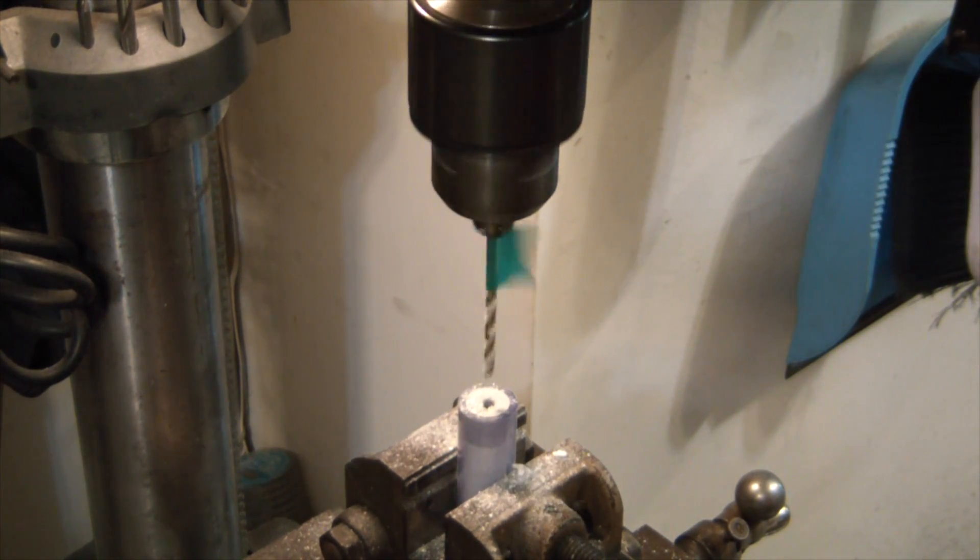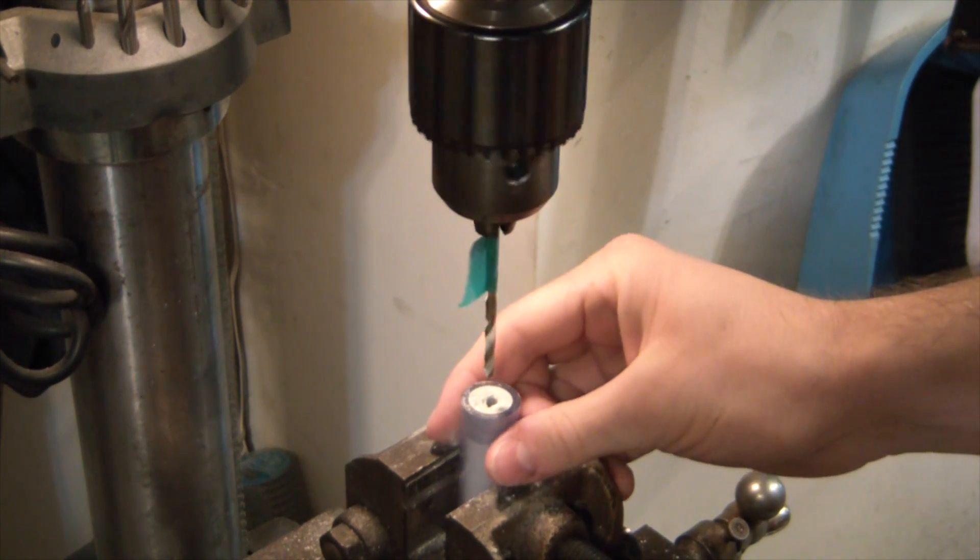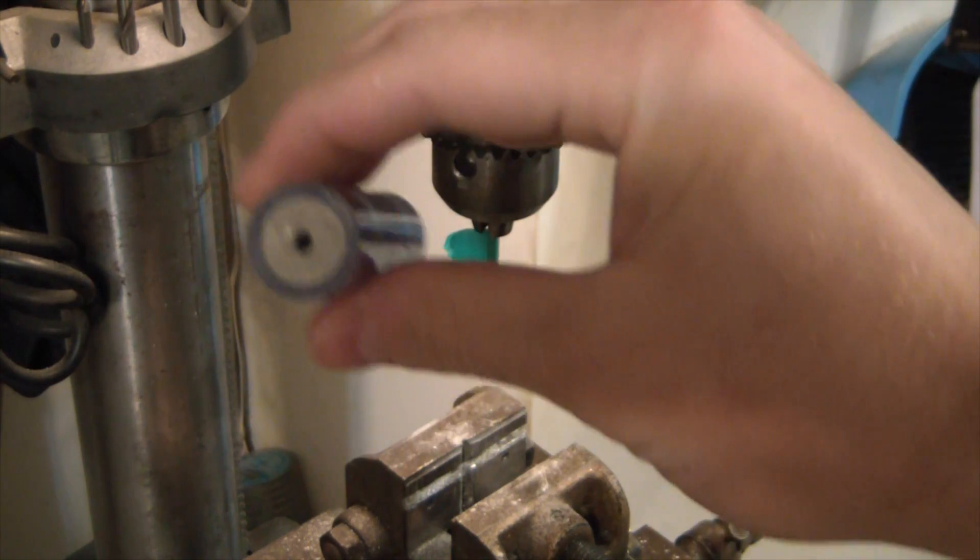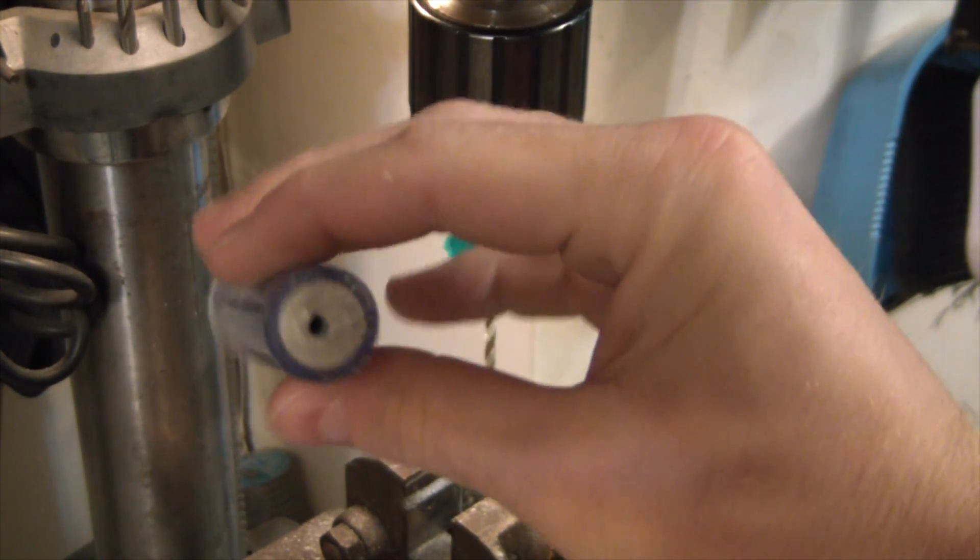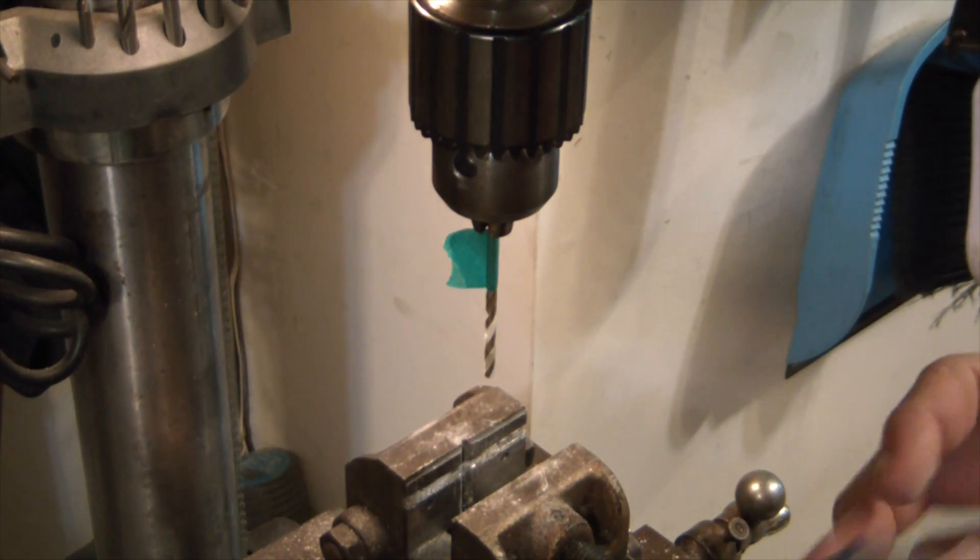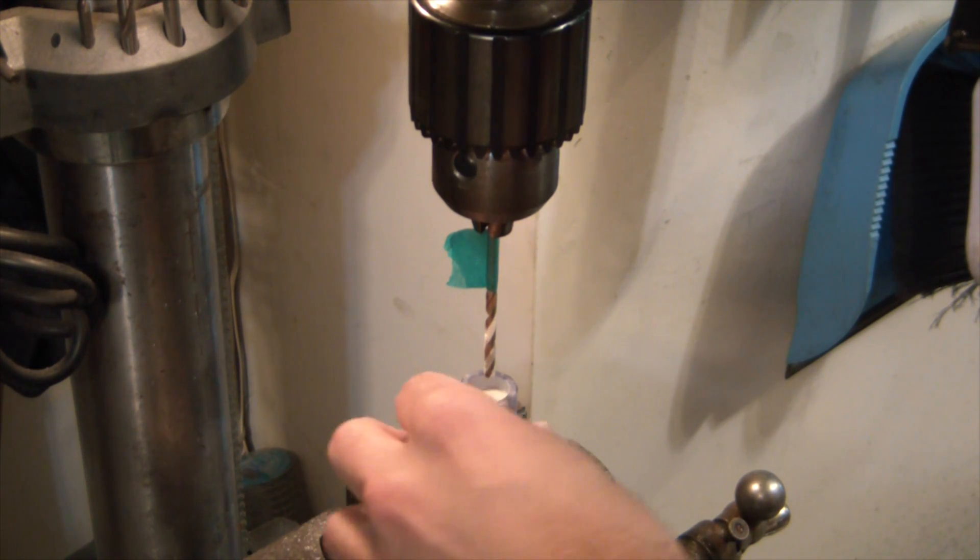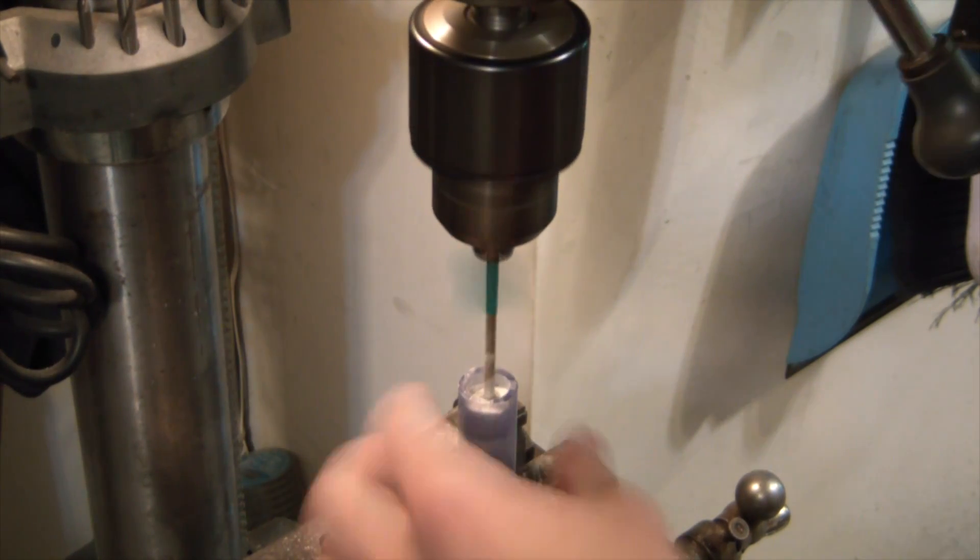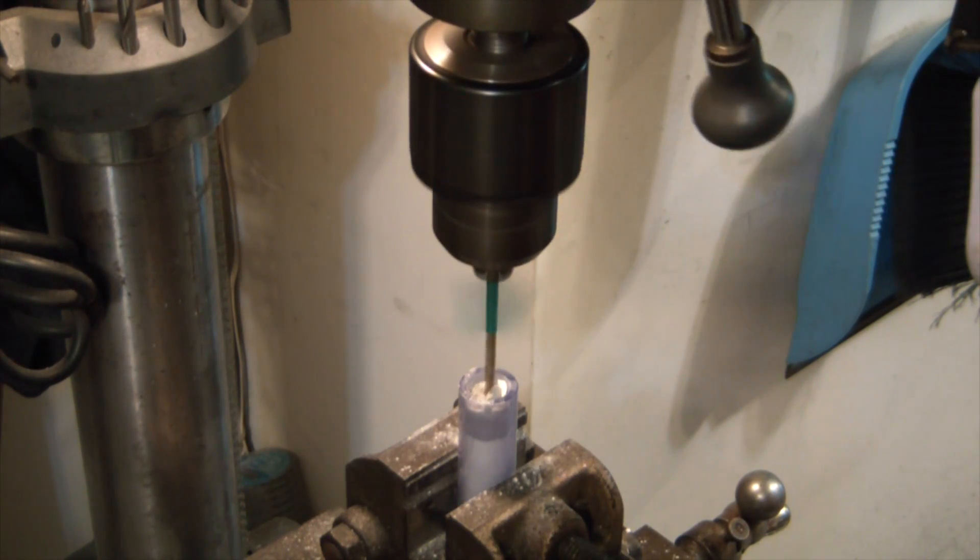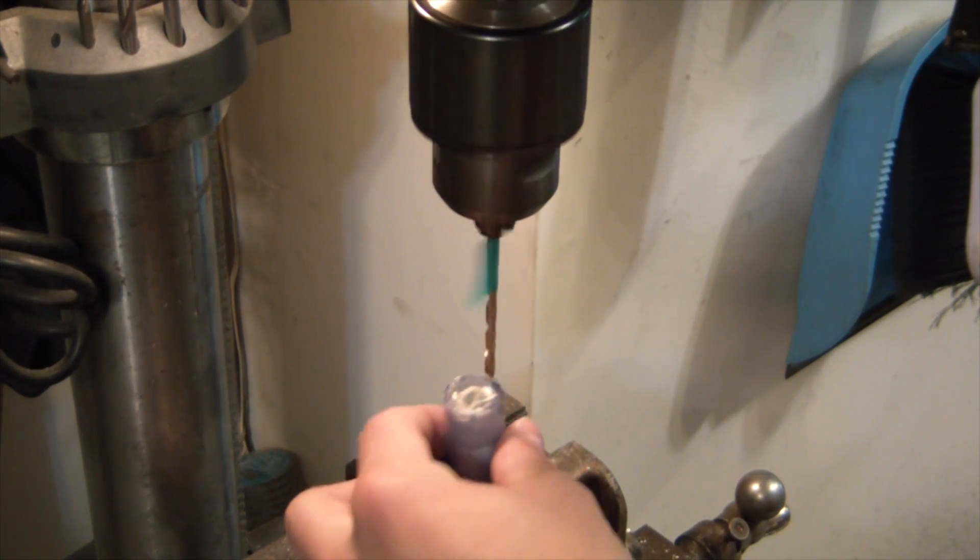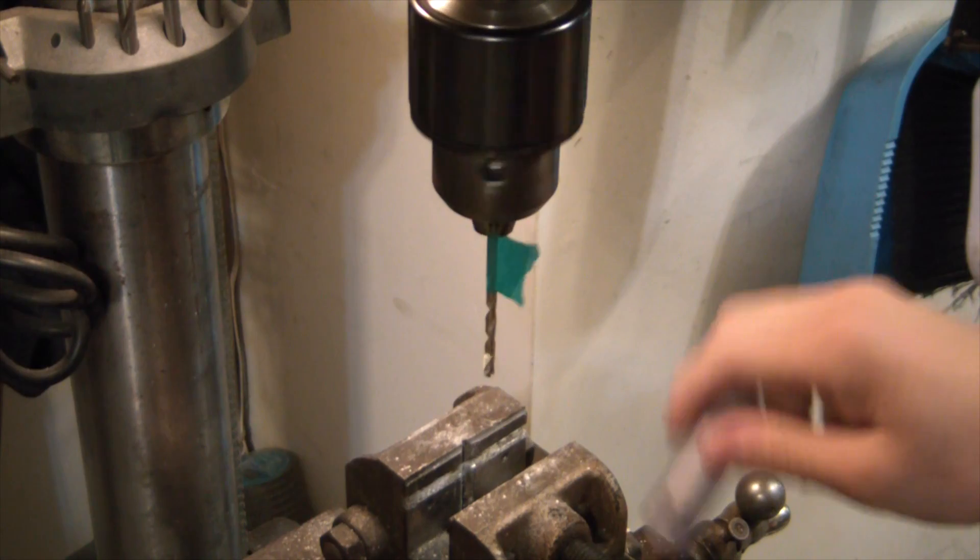You just want to go nice and slow through your propellant because this is a live rocket fuel now, so too much friction it could heat up and it could go off. We got our nozzle drilled, and then we're going to go through the back and just touch off. I think we just got the mix there.